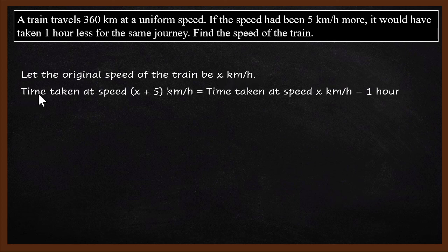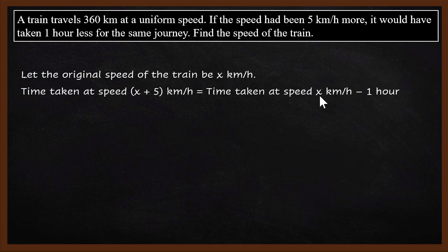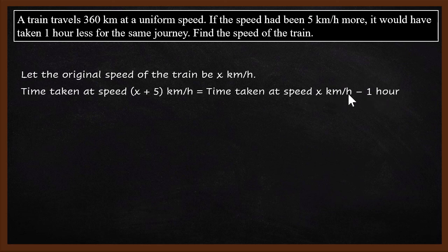What is given? Time taken at speed (x + 5) kilometers per hour is equal to time taken at speed x kilometers per hour minus 1 hour. This is important: if you go at higher speed, it takes 1 hour less. So if you go at x+5 speed, it takes 1 hour less than if you go at speed x.